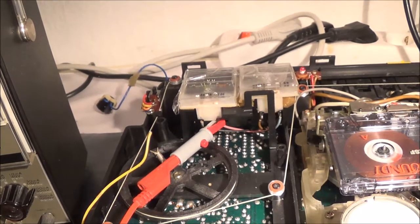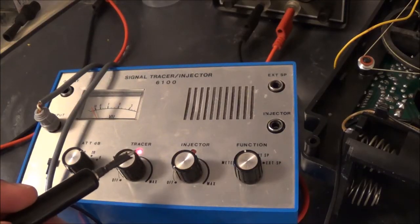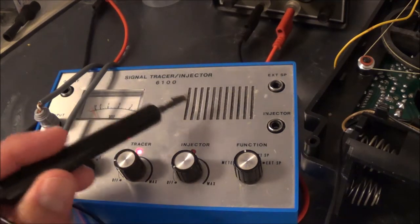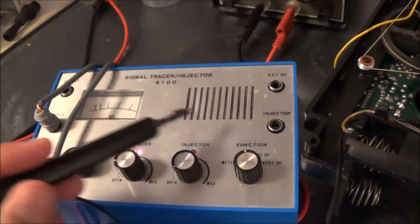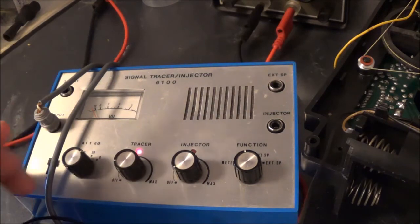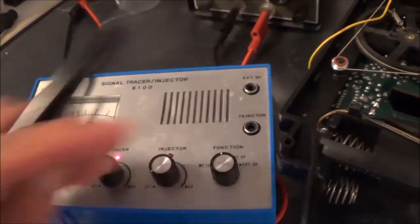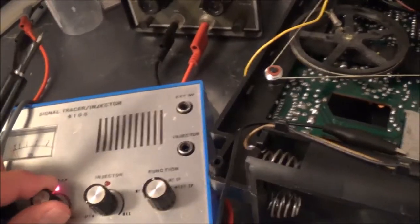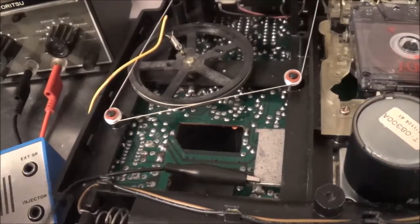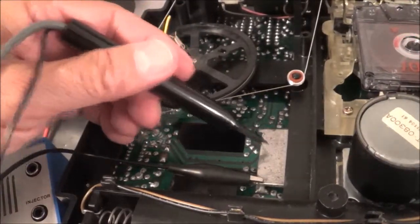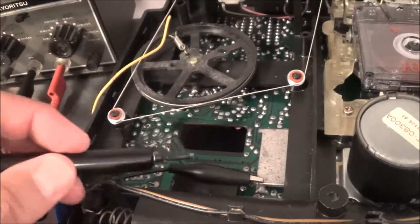So in order to check it out with the signal tracer, this signal tracer here is an old Sanyo with a little integrated speaker, so I can readily listen to, well, whatever is coming up to the meter. Go ahead and turn this thing on. I've already got it hooked up here, one side to ground probe, and here's the ground right there.